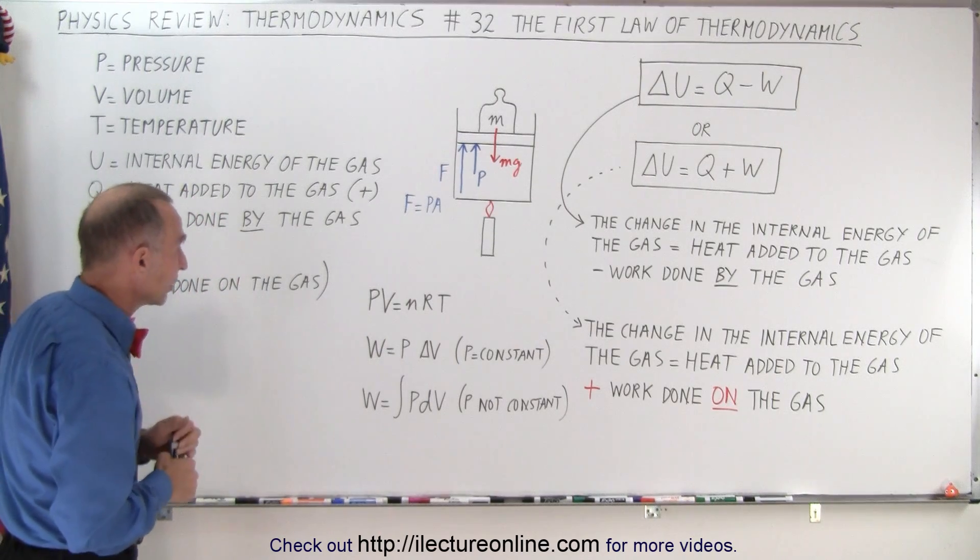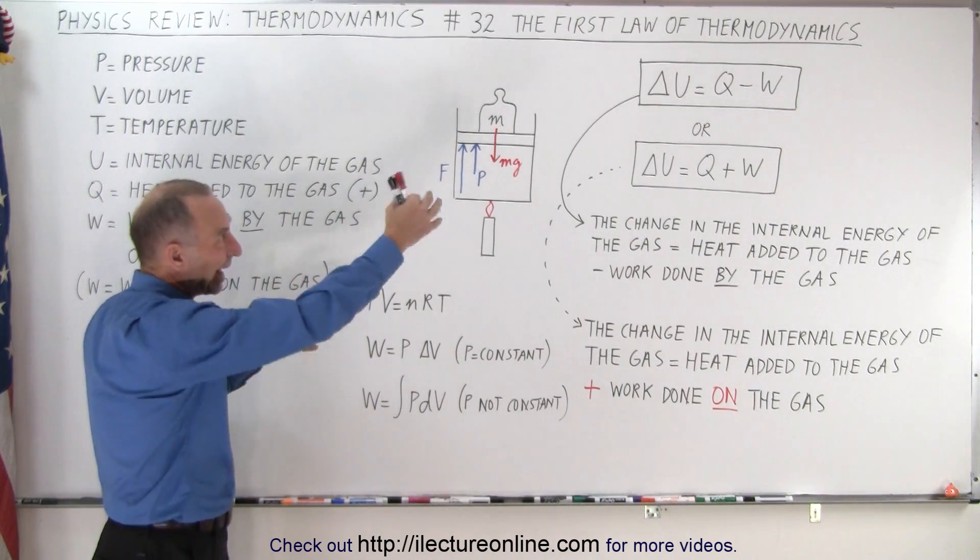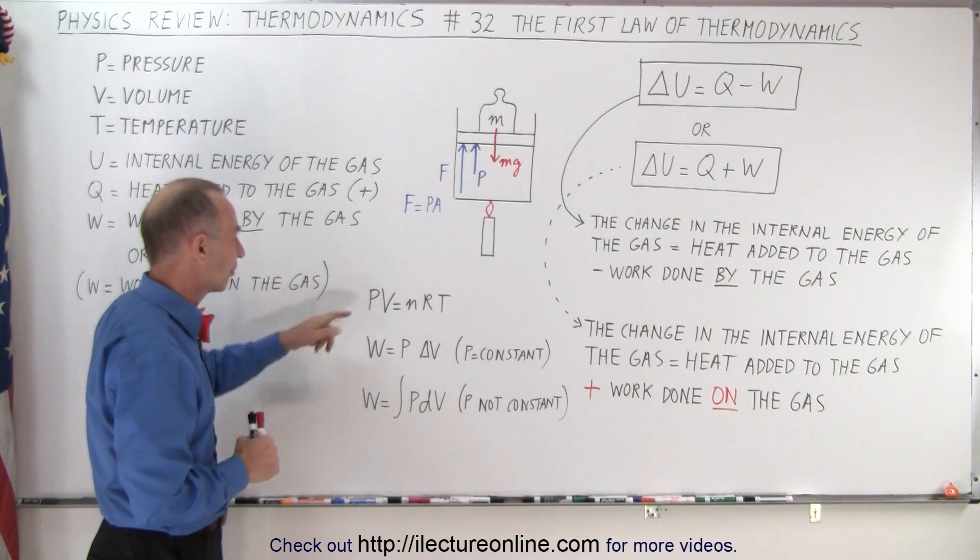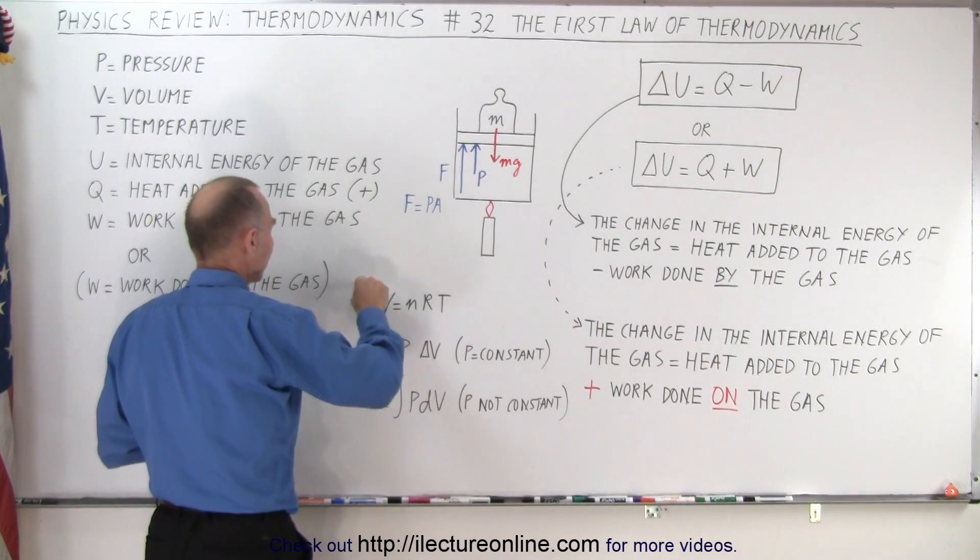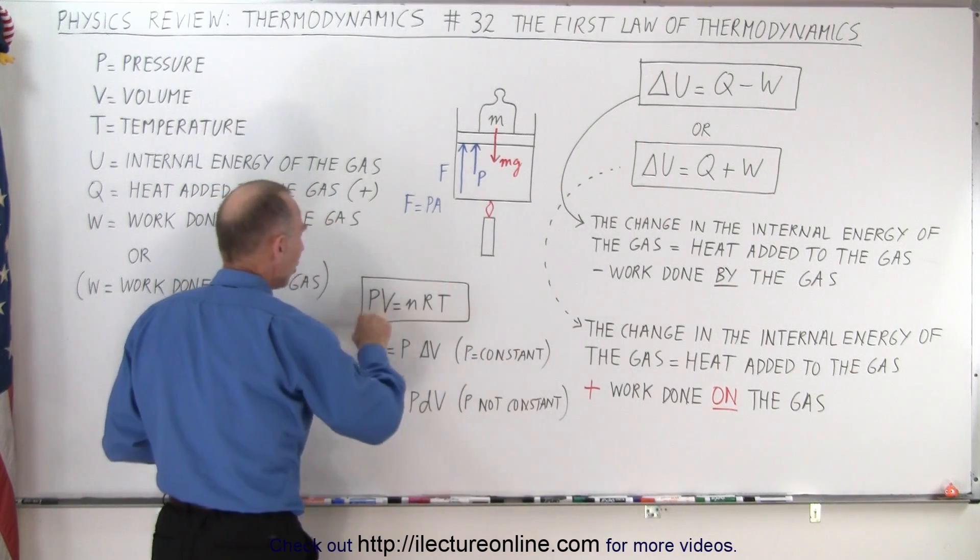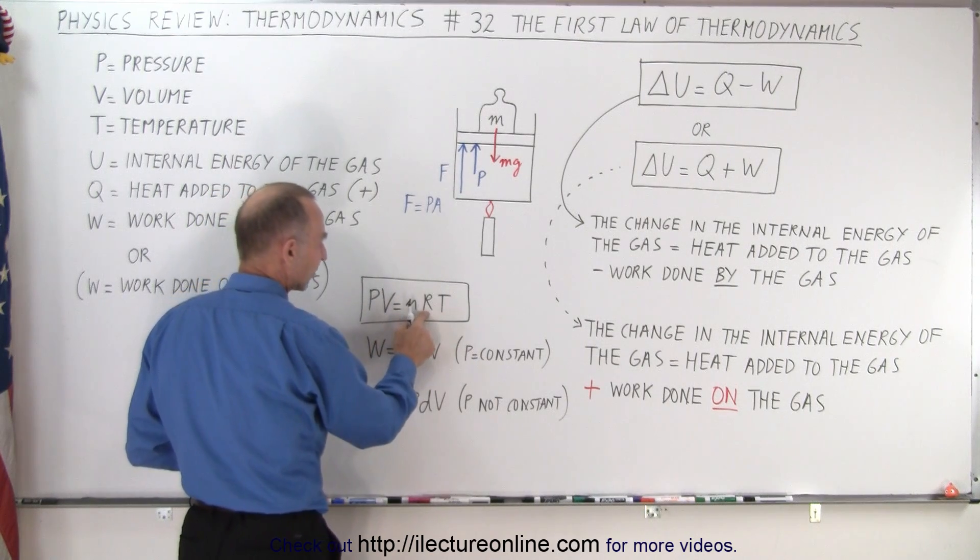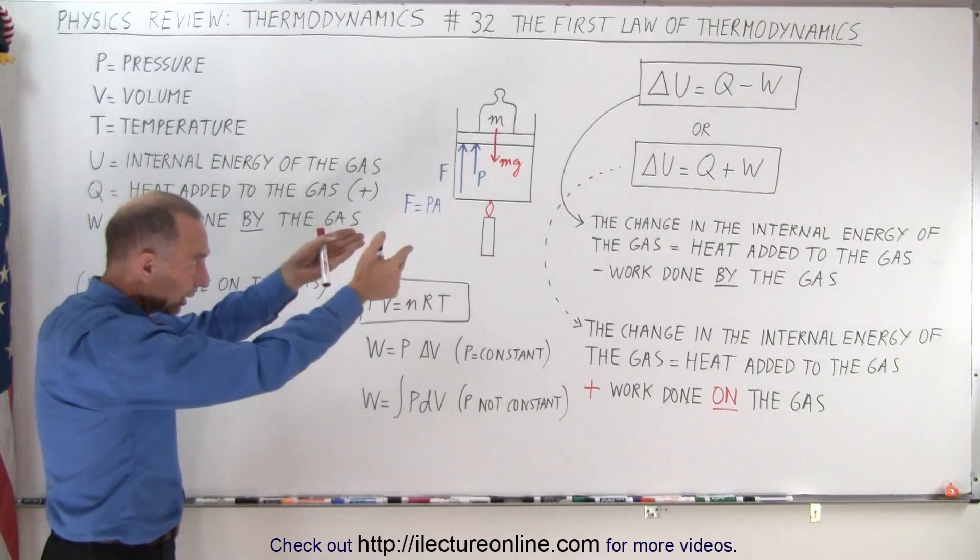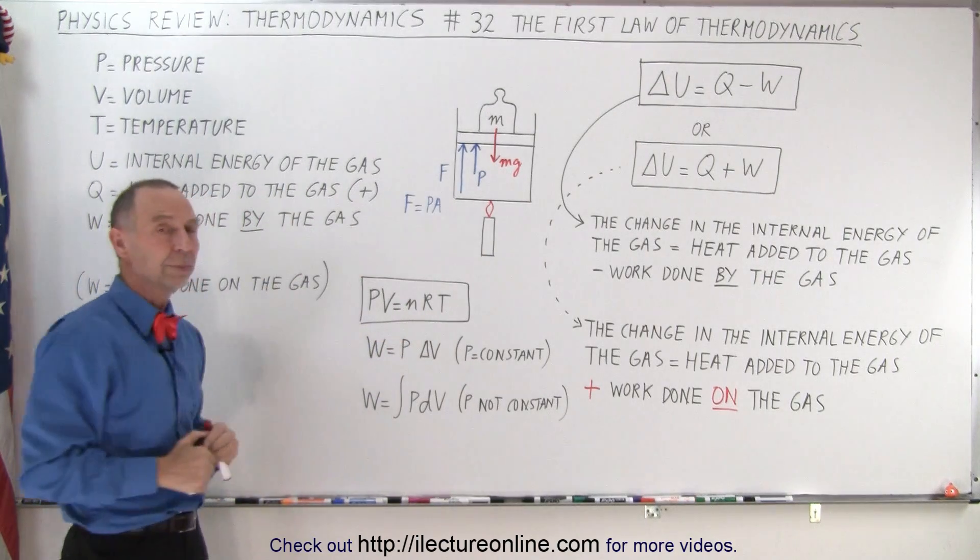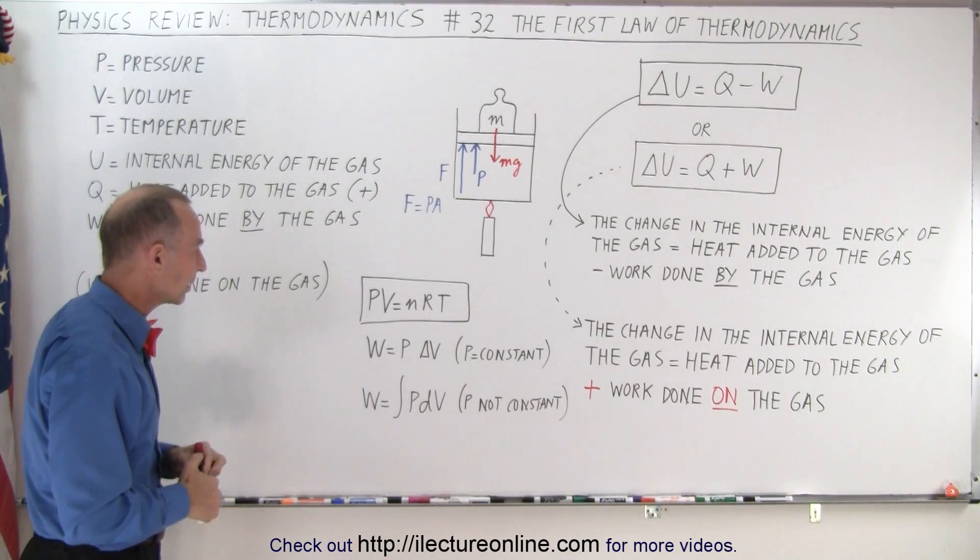One more thing is that there's two more equations that we should always use in tandem with the first law of thermodynamics. The first one is the equation of the state of the gas, right? That the pressure times the volume of the gas always equals nRT, where n is the number of moles, R is the gas constant, and T is the temperature in Kelvin. With that equation, this is always going to be correct because we're dealing with ideal gases, and that's the ideal gas equation.